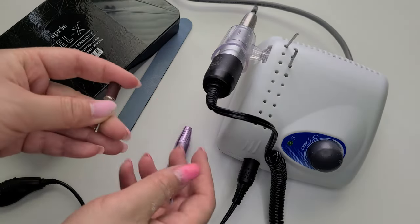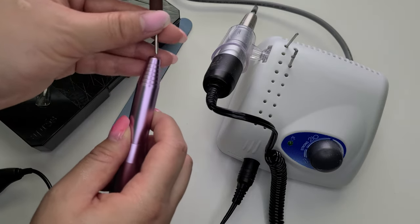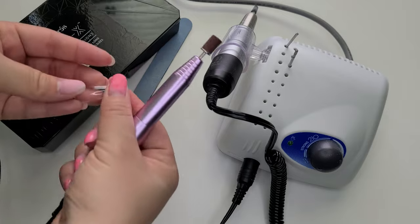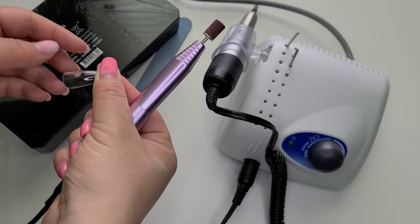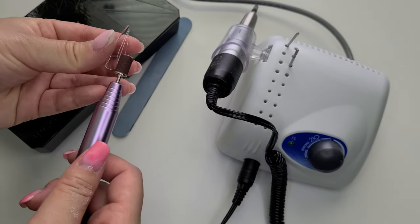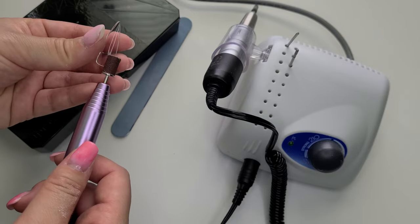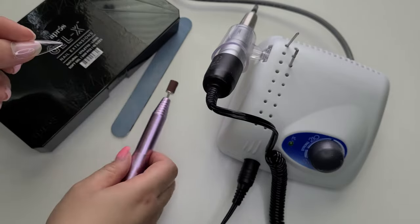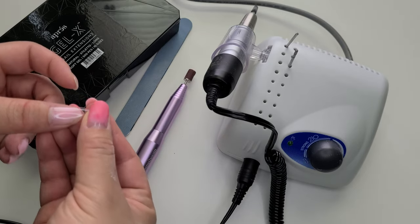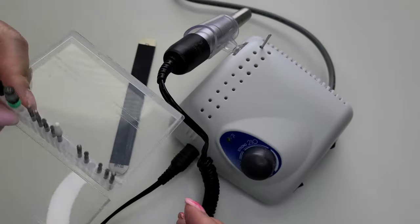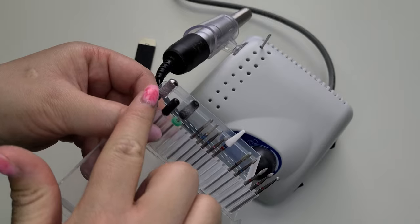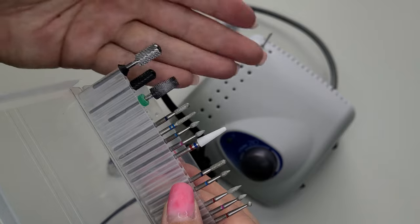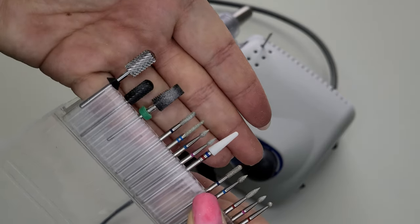Number two, the mandrel bit and sanding bands work for like one nail or two, but then they'll get really clogged and cause a lot of heat with the friction again. You're better off buying a new mandrel and proper sanding bands. And if you're going to be a professional nail tech anyways, you should not be using sanding bands because they just don't work that well. And you should be using different coarse bits for removal.